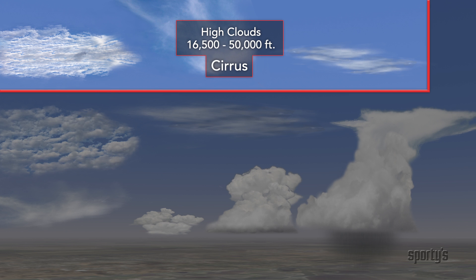Wispy high-level clouds are called cirrus and are almost entirely ice crystals. Their bases range in altitude from about 16,500 feet in higher latitudes to around 50,000 feet near the equator.